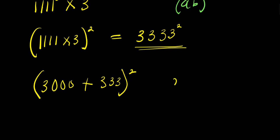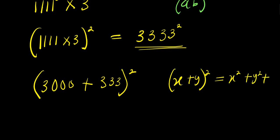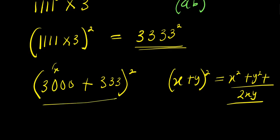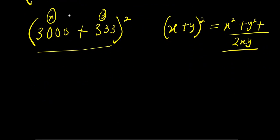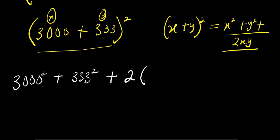If you have (x + y)² this equals x² plus y² plus 2xy. Applying that here, our x is 3000 and y is 333. So we get 3000² plus 333² plus 2 times 3000 times 333.